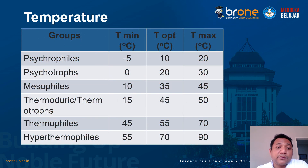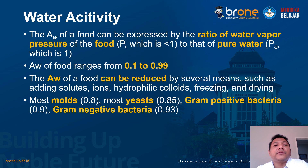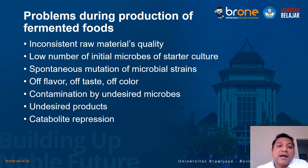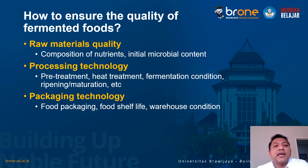Untuk temperatur juga begitu — ada yang suka suhu dingin, suhu sedang. Biasanya rata-rata mikroorganisme tumbuh pada mesophilic, sekitar 25-30 derajat, suhu ruang. Kemudian AW atau aktivitas air juga harus diketahui. Problem yang terjadi selama produksi pangan fermentasi biasanya inkonsistensi karena bahan bakunya bervariasi, jumlah mikroba yang ditambahkan terlalu kecil, adanya mutasi spontan, perubahan aroma/rasa/warna yang menyimpang, kontaminasi, dan adanya represi katabolit. Cara menjaga kualitasnya adalah dengan menjaga kualitas bahan baku, proses produksi, kondisi fermentasi, dan teknologi pengemasan.